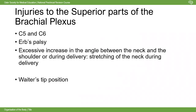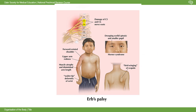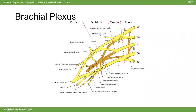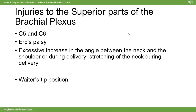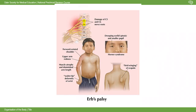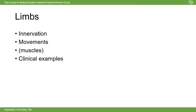Erb's palsy results from injury to C5 and C6 of the brachial plexus, producing the classic 'waiter's tip' deformity. It's commonly caused by stretching of the neck during delivery, particularly with macrosomic babies - often linked to maternal diabetes - that are difficult to deliver through a small pelvic inlet. The specific pattern of affected muscles and sensory loss can be traced directly to the C5-C6 radiculopathy. Improved obstetric practices can prevent this injury.